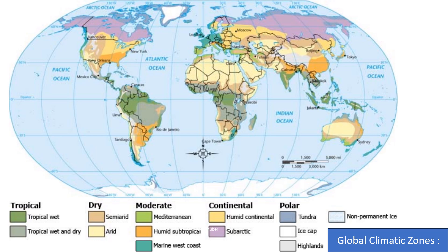Now there are different global climatic zones, and in India also we have different zonal distributions. Discussing about the global climatic zones, there are five different zones such as tropical, dry, moderate, continental and polar. In tropical we have two categories, in dry we have two categories, and moderate also has three categories. So there are different climatic zones all over the globe.